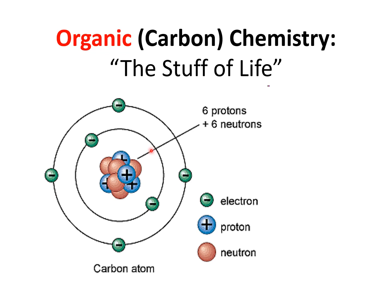Carbon has six protons, six electrons. Importantly, those four electrons on the outside are four valence electrons found in the outer shell of this atom. That means carbon can form up to four different bonds with different atoms and elements.